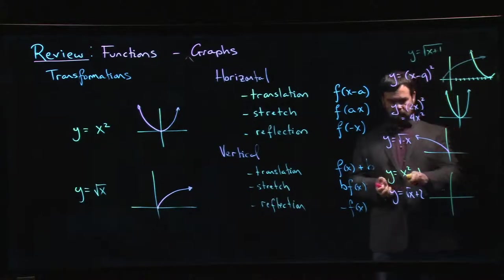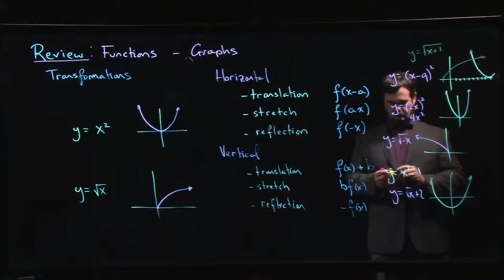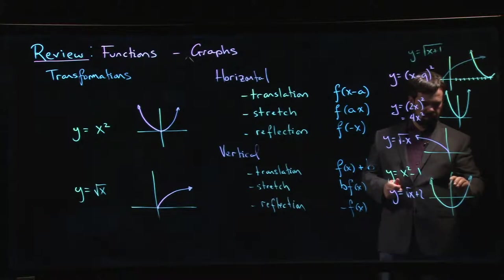If I were to plot those: this one I'm taking the regular parabola and I'm shifting it down by one unit so I get something like that. I'm taking the square root and I'm shifting it up by two units so I get something like that, starting at two.